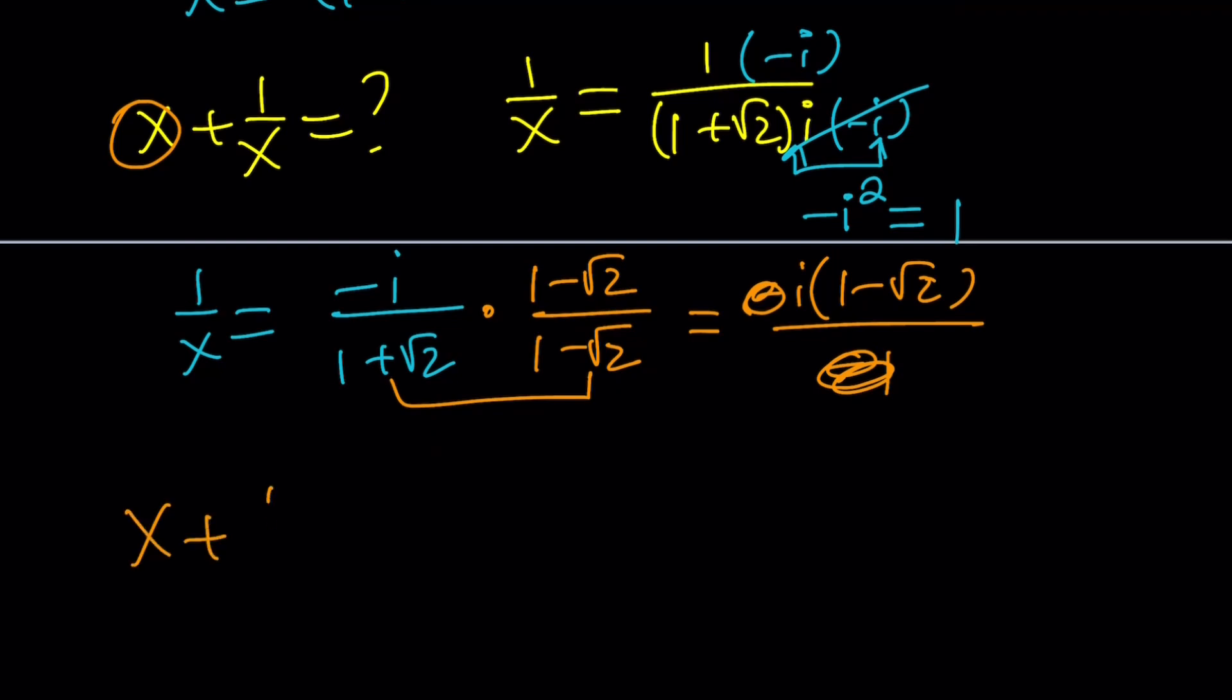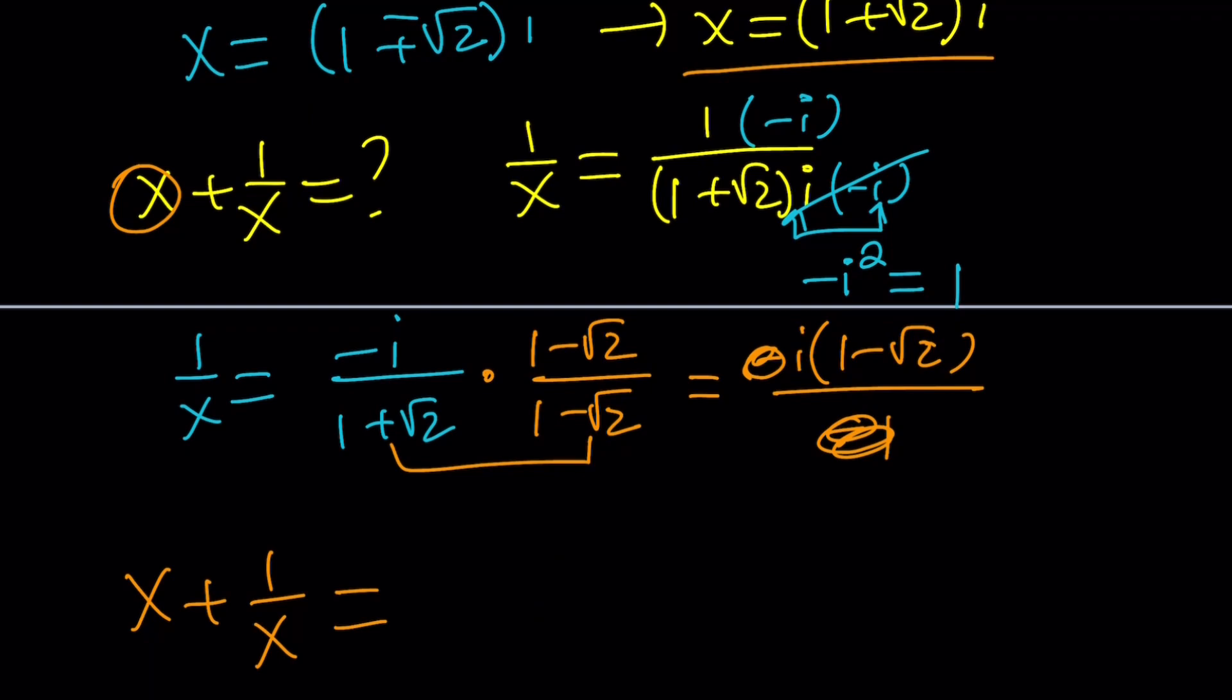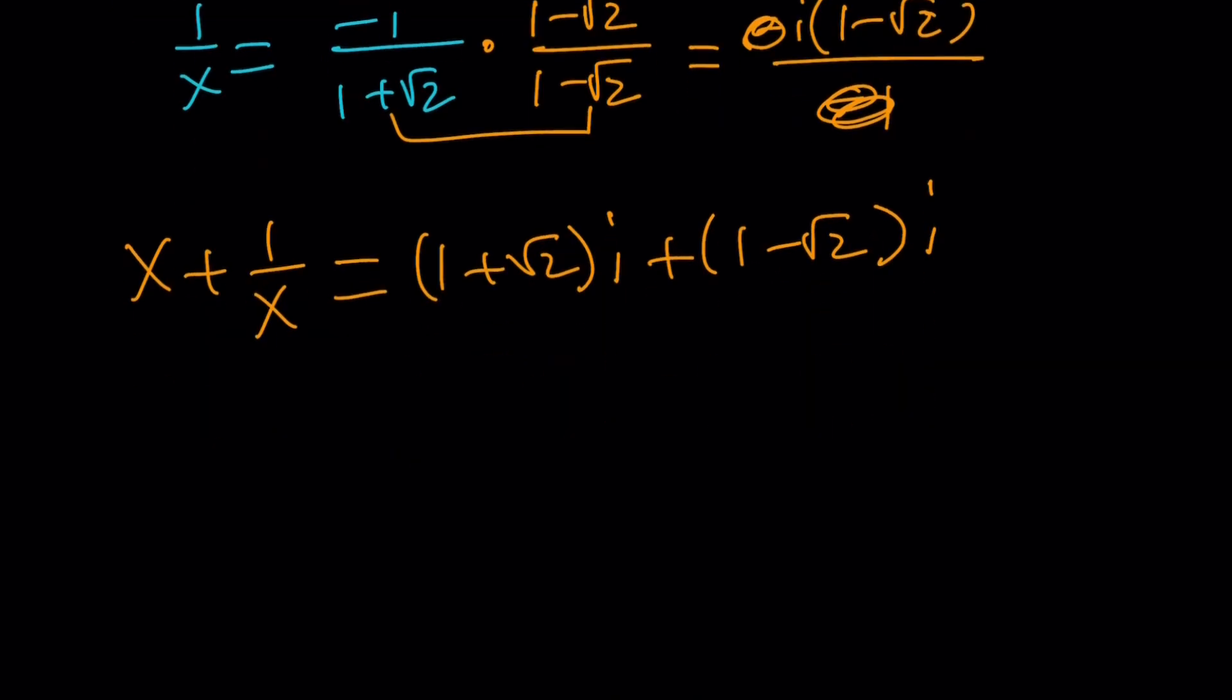x plus 1 over x equals, what is my x value? 1 plus root 2 multiplied by i. And my 1 over x value is just going to be 1 minus root 2 multiplied by i. Since they both have i, we can just add these. 1 plus root 2 plus 1 minus root 2 all multiplied by i. root 2 cancels out, and we end up with 2i. Yes, it checks. Great. Awesome. So, our solution is valid. We checked it.